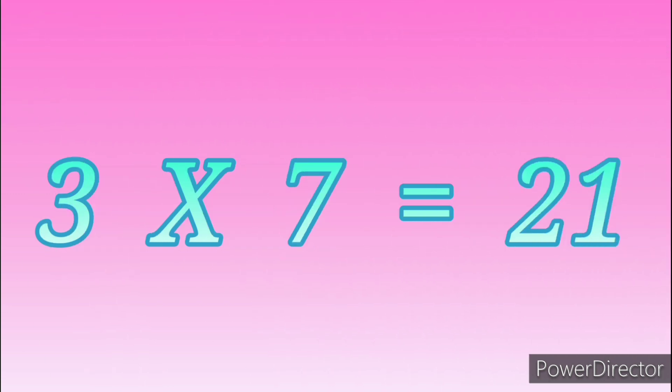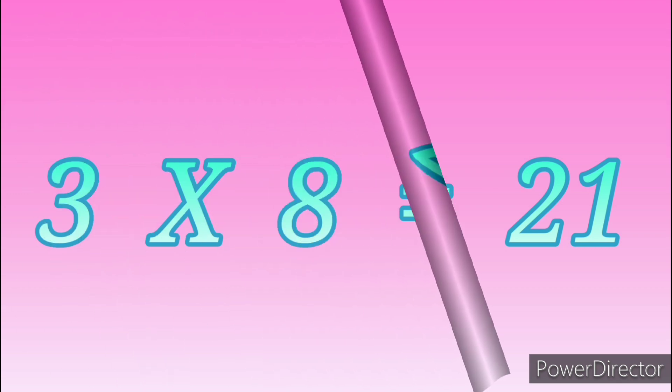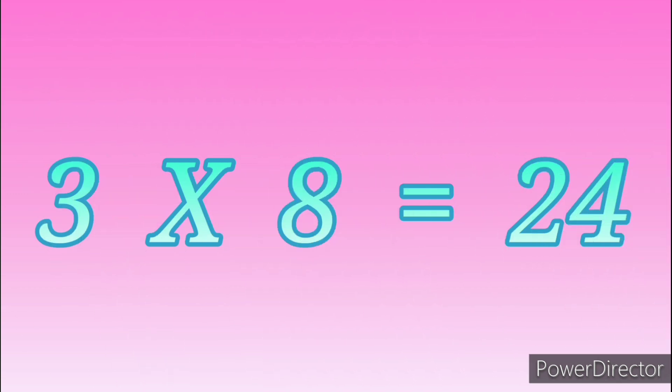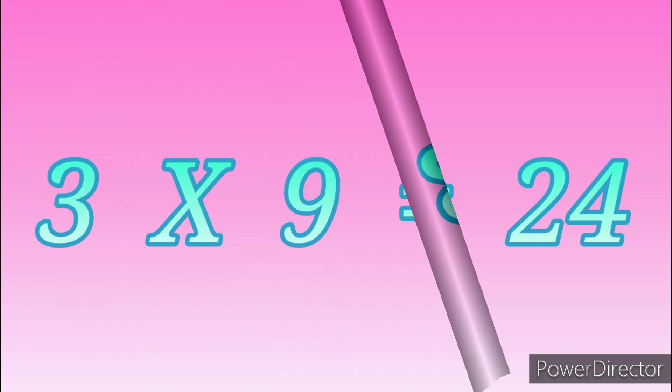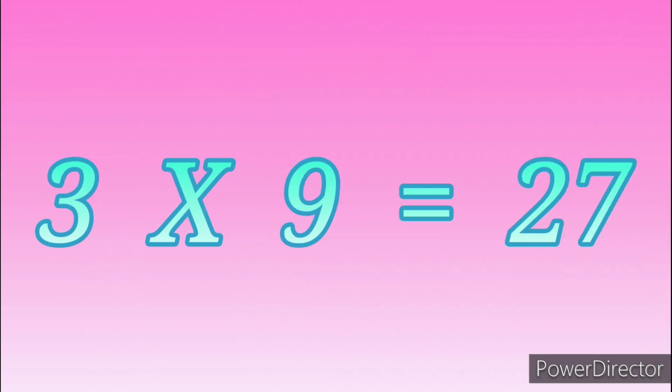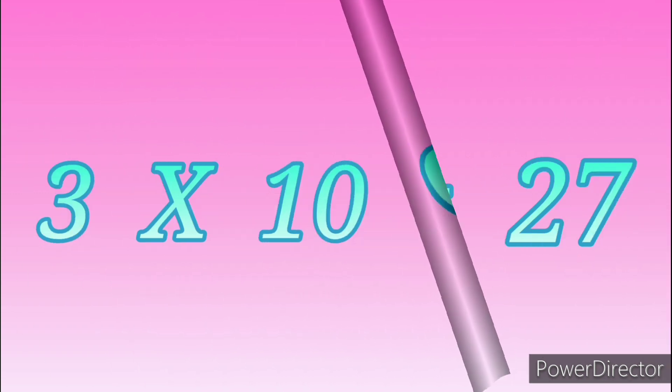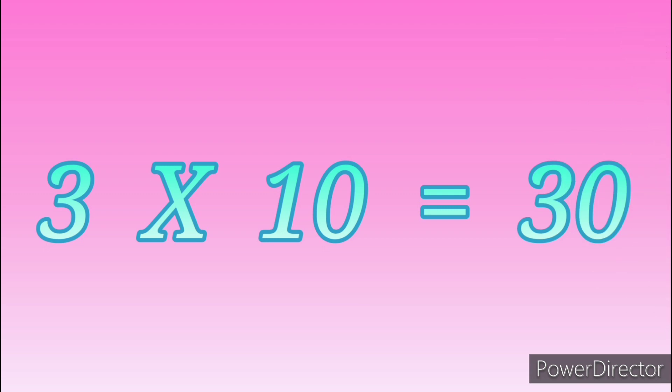3 sevens are 21, 3 eights are 24, 3 nines are 27, 3 tens are 30.